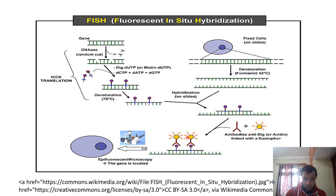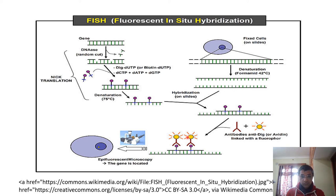For the procedure, first you will prepare and fix the slides. Then you go to the pretreatment procedure, followed by probe and slide preparation. Then the co-denaturation step for both the slides and the probe sequence. Then the hybridization step, followed by the post-hybridization step. After staining, you can store the slides at minus 20 degrees centigrade in the dark.